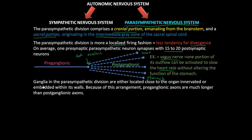The ganglia in the parasympathetic division are located close to the organ that's going to be innervated, or embedded within the walls. So parasympathetic preganglionic neurons have very long axons, and the postganglionic have short axons. Some teachers like to quiz about that.